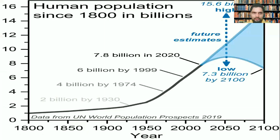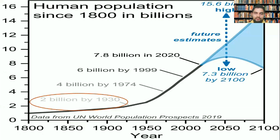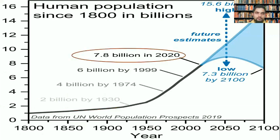One of the things that we need to consider before we look at the different challenges is the human population. Around 1930, which is about 90 years ago, less than 100 years, the world's population was about 2 billion. And today, the world population is almost 8 billion.